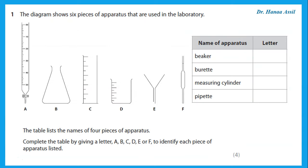In this paper, the first question says the diagram shows six pieces of apparatus that are used in the laboratory. The table lists the names of four pieces of apparatus. Complete the table by giving a letter A, B, C, D, E, or F to identify each piece of apparatus.